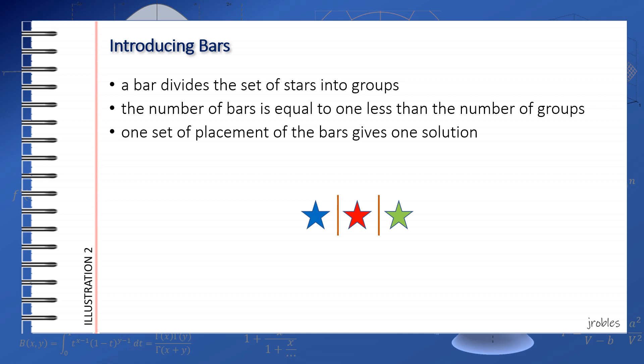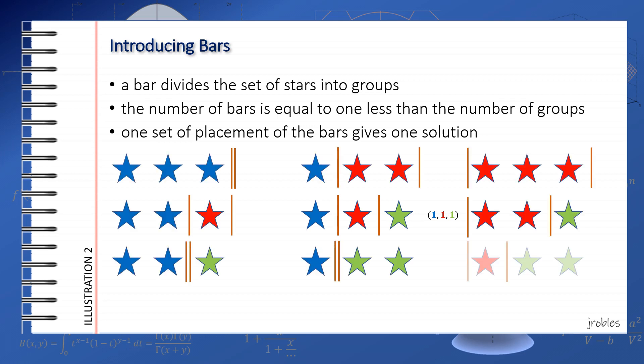We thus have the solution 1 blue, 1 red, and 1 green. Let's denote this coordinate as (1,1,1). We can search all the other solutions by placing the 2 bars in different positions. I have listed the solutions as shown here. Based on this list, we have 10 possible sets for this problem.